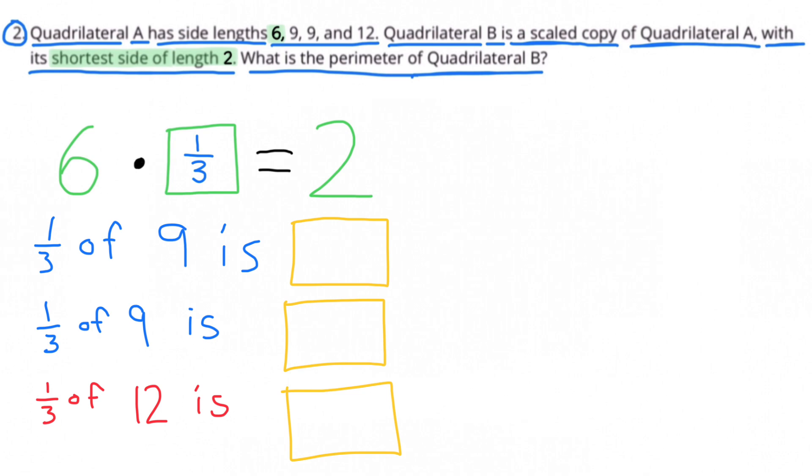So now we need to find the lengths of the other lines: 1 third of 9, 1 third of 9, and 1 third of 12. We can add those up and we'll find the perimeter.